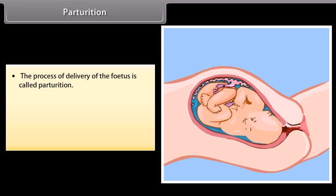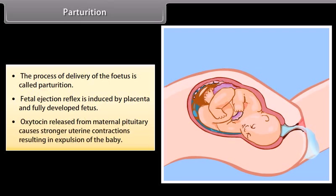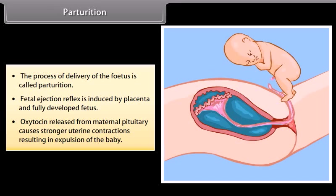The process of delivery of the fetus is called parturition. The fetal ejection reflex is induced by the placenta and the fully developed fetus. Oxytocin released from the maternal pituitary causes stronger uterine contractions, resulting in expulsion of the baby.